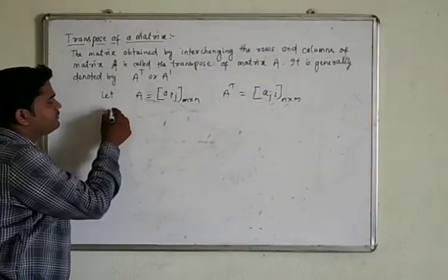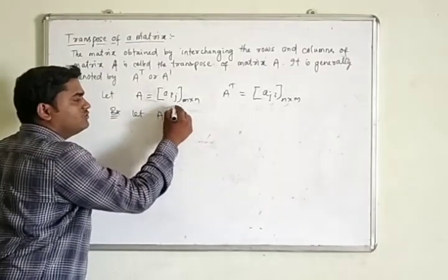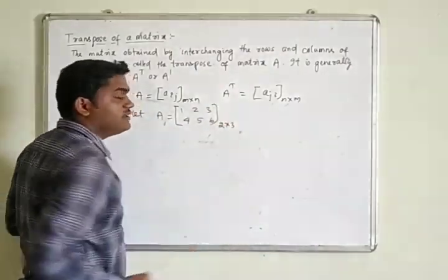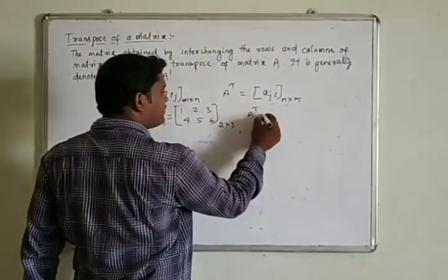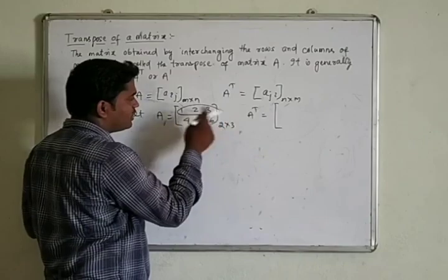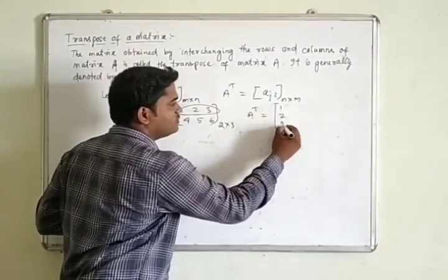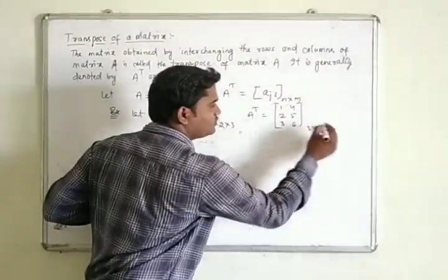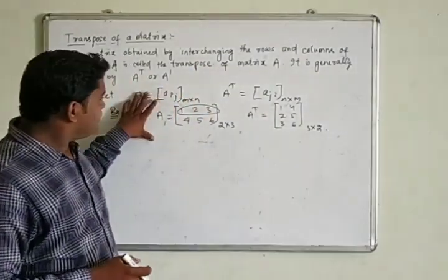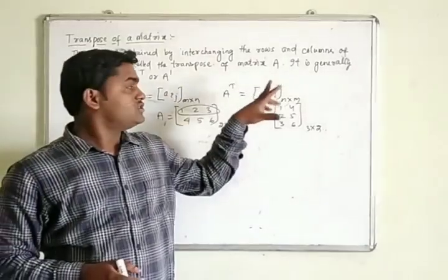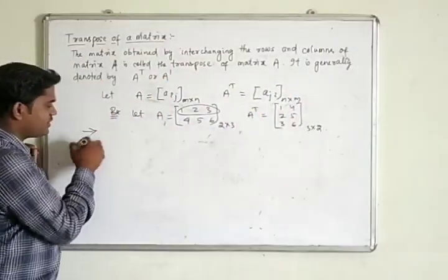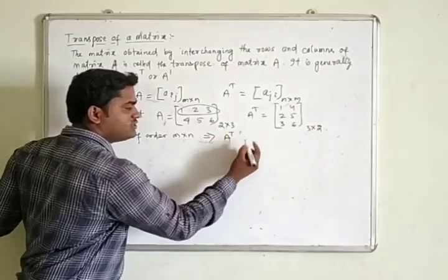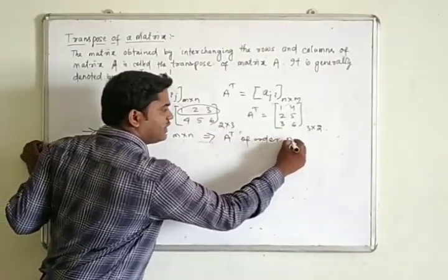Let's see an example. Let A equal to [1, 2, 3, 4, 5, 6] be a matrix of order 2×3. Then A^T is obtained by interchanging rows and columns: the first row [1, 2, 3] becomes the first column and the second row becomes the second column, so A^T is of order 3×2. This shows that if A is of order M×N, then A^T is of order N×M.